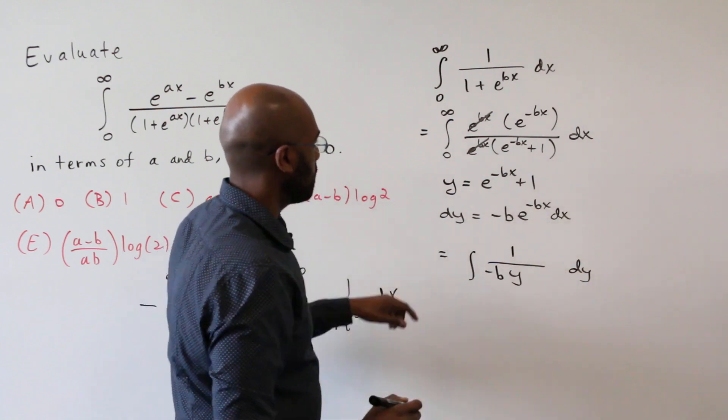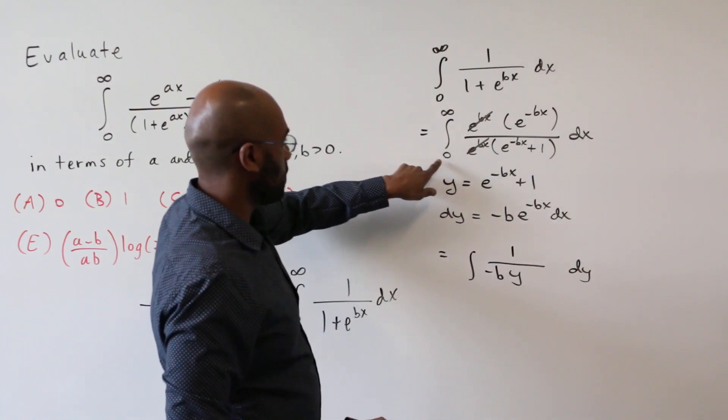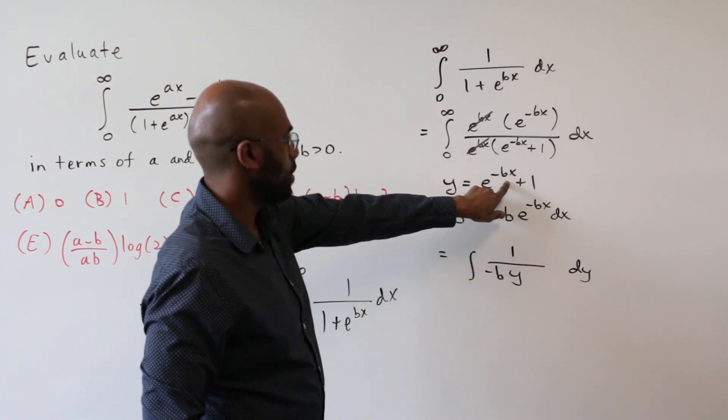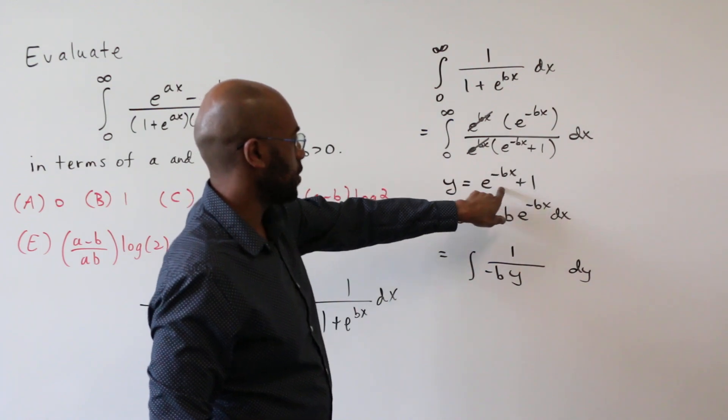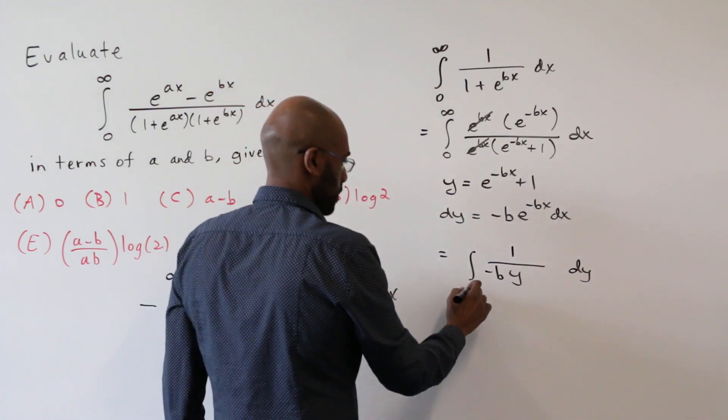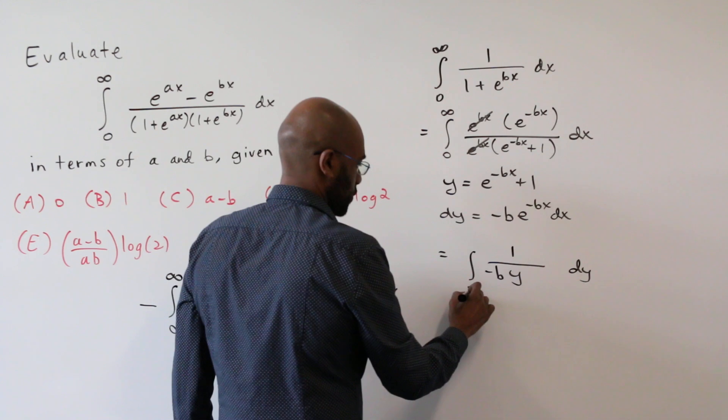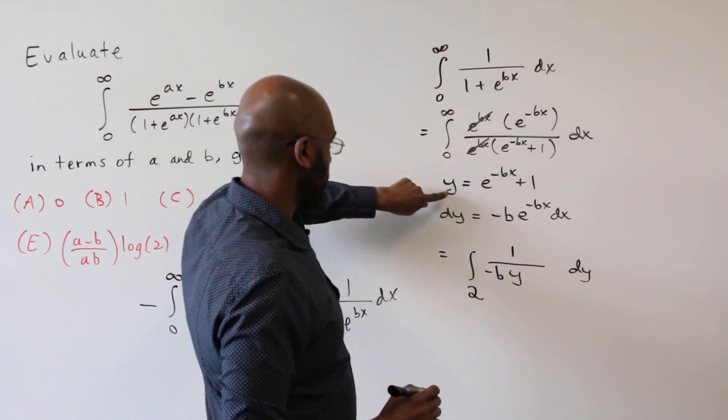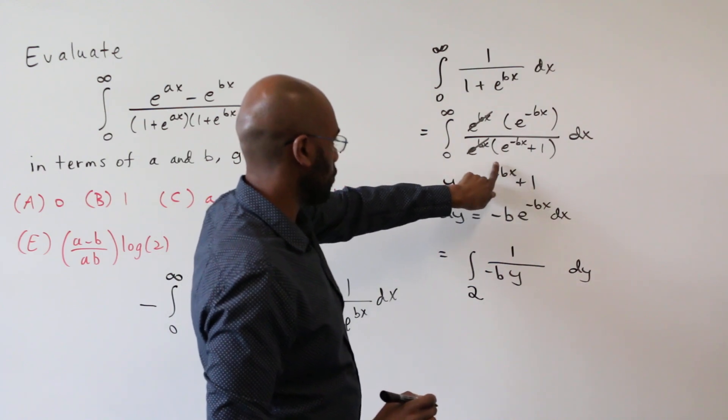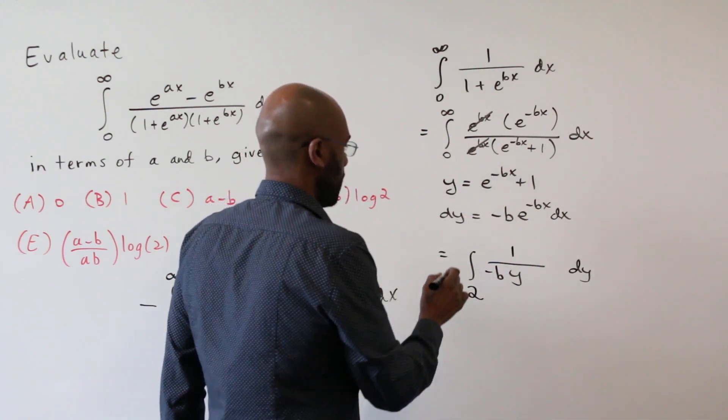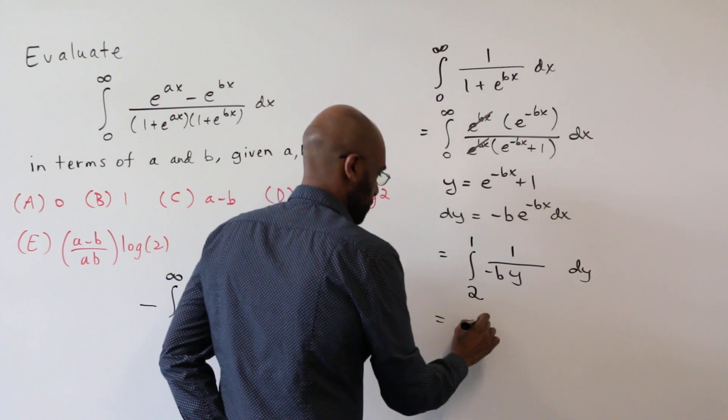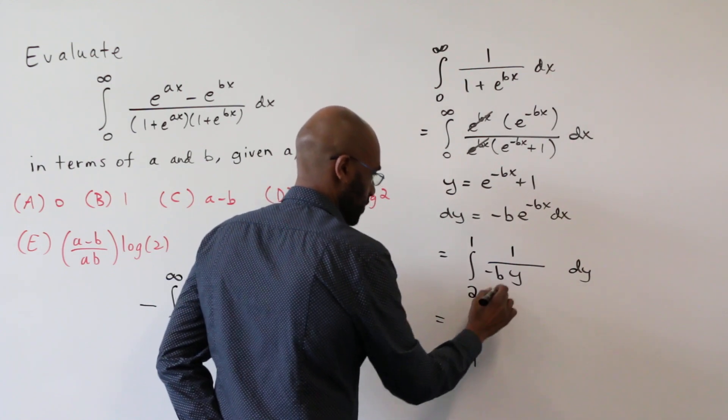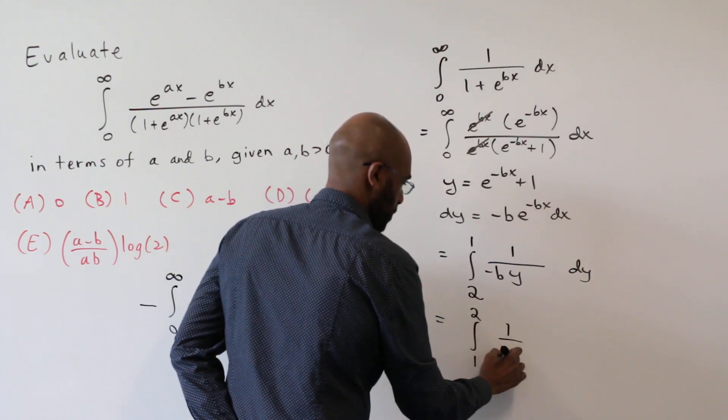Now our bounds, when x is zero, this here becomes a one. So y has a lower bound here of two. And at infinity, what happens? We have that this thing goes to zero. So we have an upper bound of one. And we can switch this to the integral from one to two of one over b y dy.